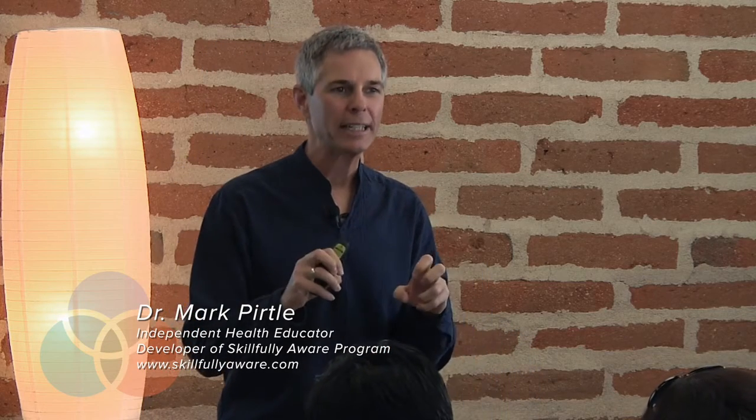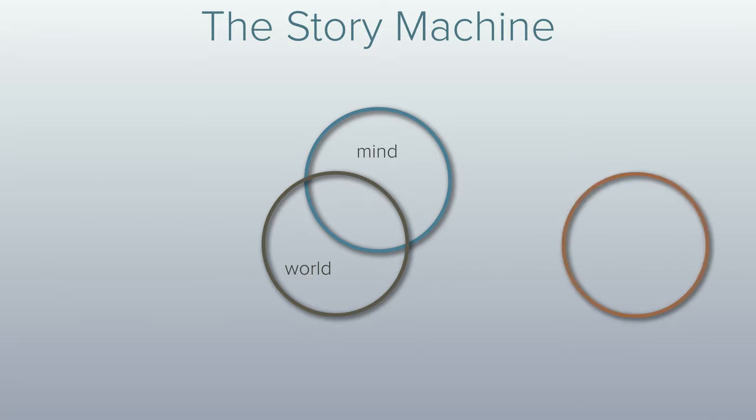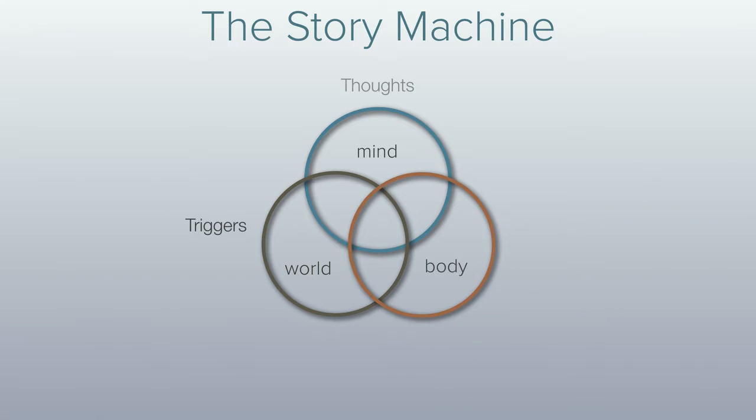Okay, so we're talking about how the self is actually a story. Now what I want to do is show you how the story writes itself inside of us, inside of our network. So this is really the whole skillfully aware programming in sort of a pithy slide here. I love circles. Venn diagrams show relationships. The story machine is all the energy and information that's flowing through the network that you call you.